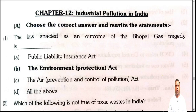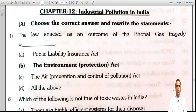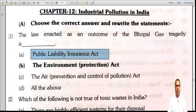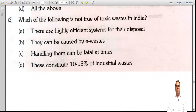The next topic is industrial pollution in India. Question: the law enacted as an outcome of the Bhopal gas tragedy is what? The Bhopal gas tragedy killed thousands of people due to gas leakage — the best example of how pollution can be disastrous. The Public Liability Insurance Act is not related to Bhopal. The correct answer is option B: the Environment Protection Act, which the government had to pass after that tragedy.